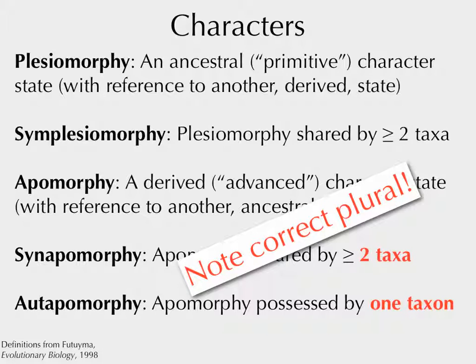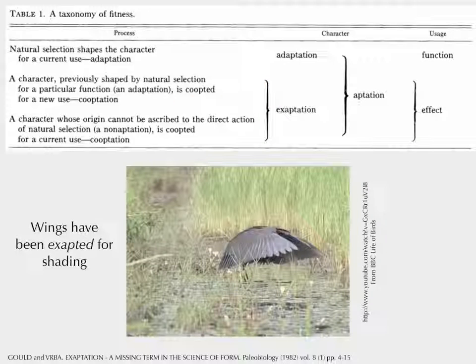Correct plurals: one taxon, two taxa. I will fail you if you get this wrong. Also: genus, genera. There's a great book about Nabokov I had to stop reading because it kept saying 'genuses.' Please say genera.